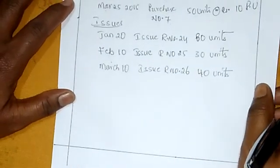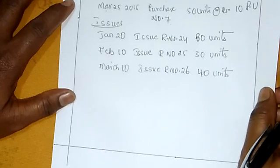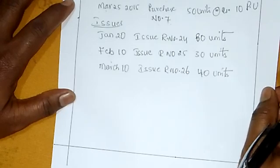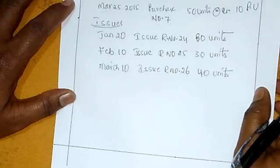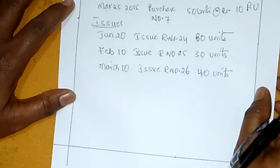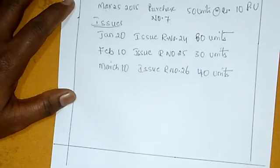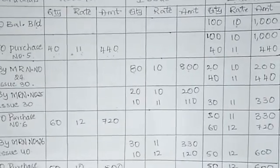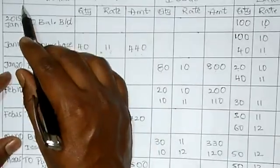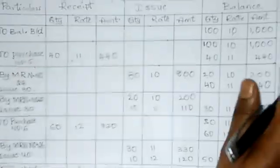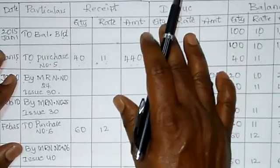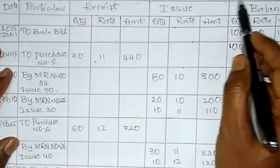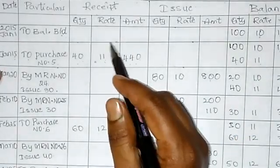This is the given problem data. Now we will solve the problem. First look at the pro forma, then solve the problem. The heading is store ledger account under FIFO method.